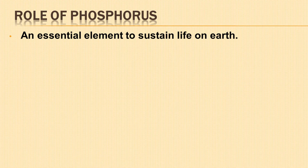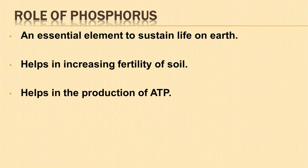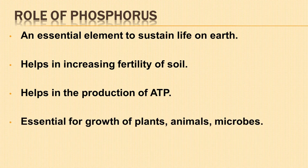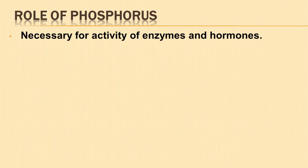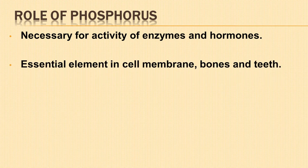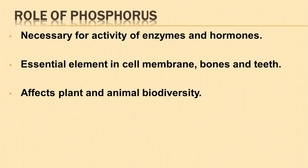Next is the role of phosphorus. Phosphorus is one of the essential elements for sustaining life on earth. It helps in increasing the fertility of soil. The phosphorus cycle helps in the production of the energy-rich molecule ATP. It is essential for the growth of plants, animals, and microbes present in the soil. Mineralization of phosphorus helps in the disposal of waste. Phosphorus is necessary for the activity of various enzymes and hormones, and it is an essential element in the composition of cell membranes, bones, and teeth. Phosphorus levels also affect plant and animal biodiversity.